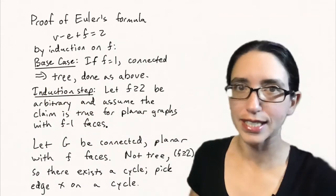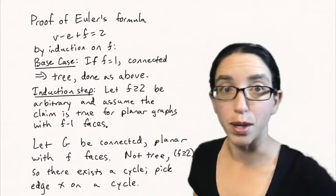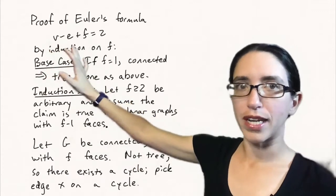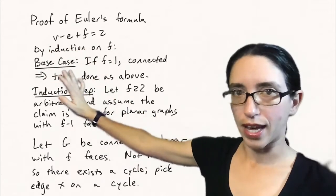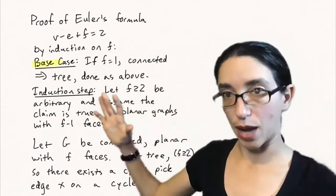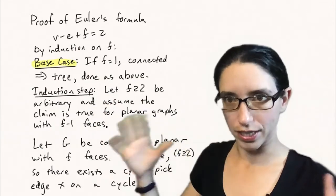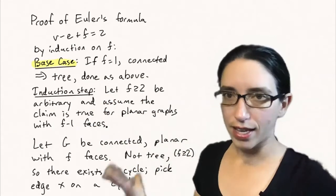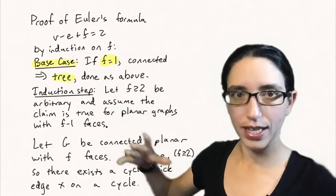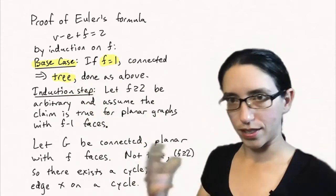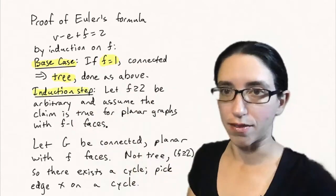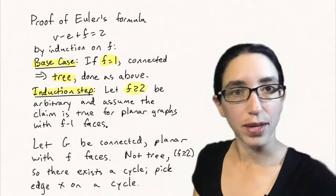Let's prove Euler's formula by induction on the number of faces. Euler's formula states that for any connected planar graph, V minus E plus F equals two. The base case is F equals one, which is the smallest possible number of faces since there must always be an outer region. A connected planar graph with just one outer face and no enclosed regions is a tree, and we showed above that trees have Euler characteristic two. So the base case is done.